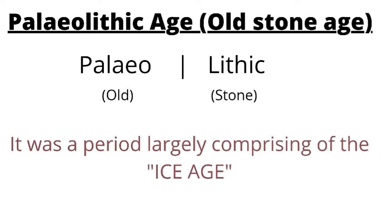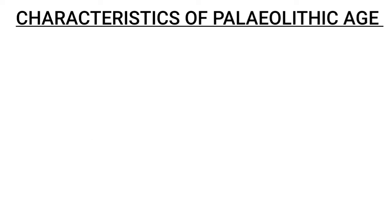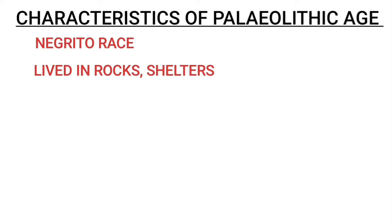This paleolithic period revolved around the period during the ice age. The characteristics of the Paleolithic age are that Indian people during this time were believed to have belonged to the Negrito race, and they lived in rocks, caves, near rivers, etc.